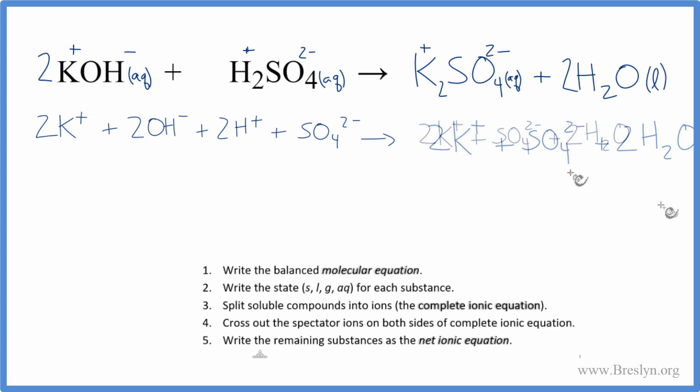So we've got our total ionic equation. Now we cross out the spectator ions, and that'll give us the net ionic. We're looking for things that are the same on both sides. We have 2K+ here and 2K+ there, cross them out. SO4 2- here and right there. That's really all we can cross out. So this is the net ionic equation.